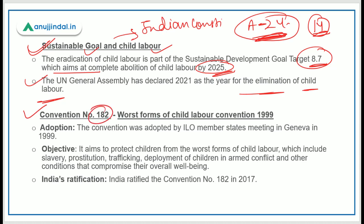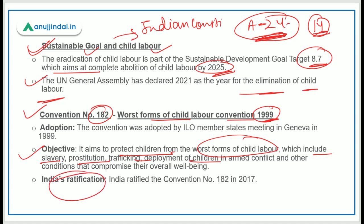Convention Number 182, the Worst Forms of Child Labour Convention, was adopted in 1999. It aims to protect children from the worst forms of child labour, which includes slavery, prostitution, trafficking, deployment of children in armed conflict, and other conditions that compromise their overall well-being. India ratified this Convention Number 182 in 2017.